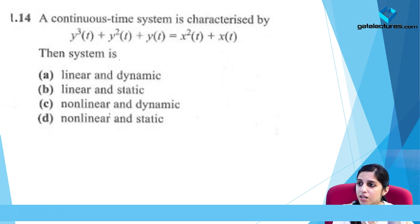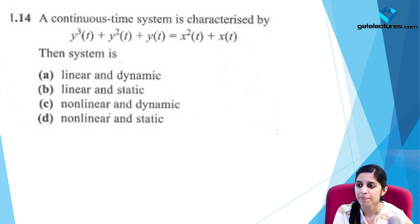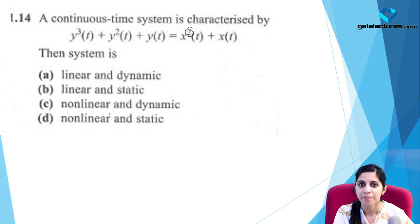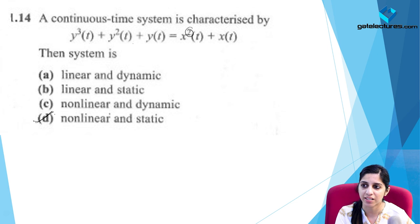For the continuous time system y³(t) + y²(t) + y(t) = x²(t) + x(t): since there are square terms, the system is non-linear. Since all arguments are t with no past or future values, the system is static. The correct option is B: non-linear and static.